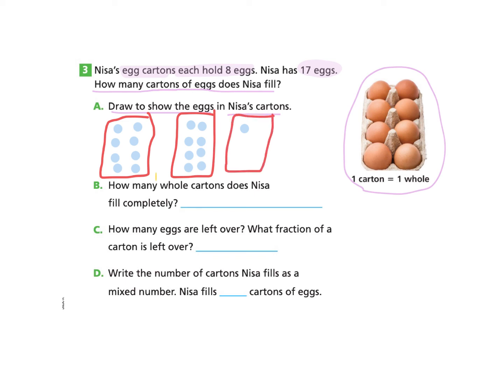So we can answer part B, how many whole cartons does Nisa fill completely? We can see that two cartons are filled completely. Part C asks how many eggs are left over? What fraction of a carton is left over? So we know that there is only one egg leftover. So we can answer that part of the first question. There's only one egg. And then we see that in this carton, there are eight spots for an egg, but there's only one egg. So the fraction of a carton that's left over is we have one egg and there are eight spots for those eggs. So we have made the fraction one eighth of a carton.